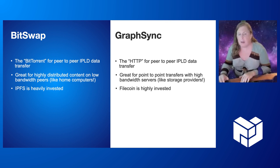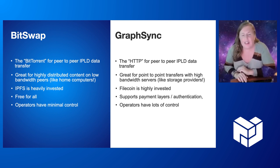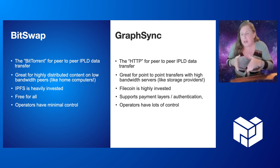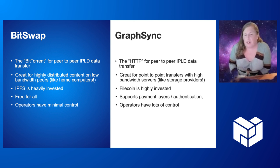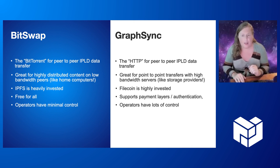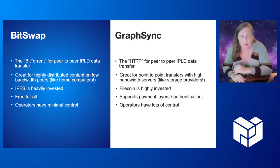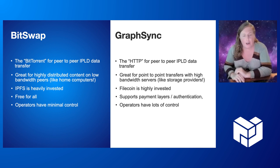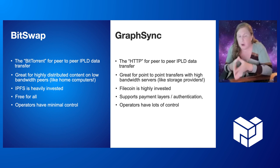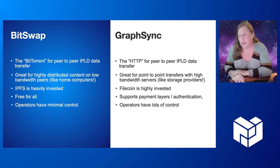BitSwap is the bread and butter of IPFS, while GraphSync was written in the course of Filecoin development. This has led to some big differences in the implementations we've produced. These aren't differences that are inherent to the protocol, but they're nonetheless quite significant. GoGraphSync supports layers for payments and authorization, while GoBitSwap keeps everything free. And GoGraphSync provides multiple layers of control to our operators, while GoBitSwap has a lot less configurability.